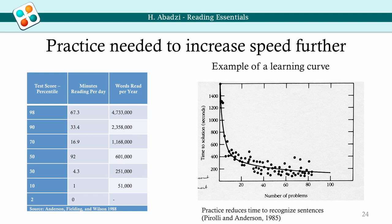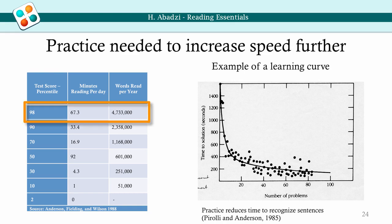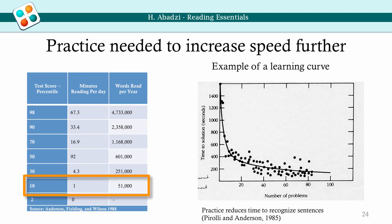Attainment of automaticity is only the beginning. Practice increases speed and efficiency in extracting information from text. Learning curves on various repetitive tasks show an initially big reduction in reaction time that eventually levels off. To slide down the learning curve, many hours are needed. Students in the United States who score at the 98th percentile may read 4.7 million words per year, or 67 minutes per day. Those scoring in the 10th percentile may read 51,000 words per year, or just 1 minute a day.